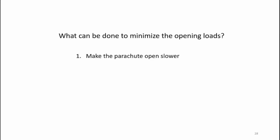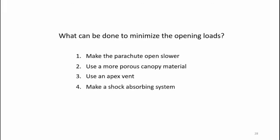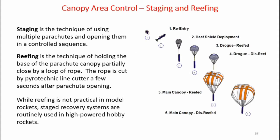Here are some ways to minimize opening loads: you can make the parachute open slower, use a more porous canopy material, use an apex vent which is a hole in the top of the parachute, or make a shock absorbing system. Canopy area control is known as staging and reefing. Staging is a technique of using multiple parachutes and opening them in a controlled sequence — here you can see a drogue parachute which comes out first, and then the main canopy which deploys. Reefing is a technique of holding the base of the parachute canopy partially closed by a loop of rope; this loop is cut by a pyrotechnic line cutter a few seconds after parachute opening to help reduce opening loads. While reefing is not practical in model rockets, staged recovery systems are routinely used in high-powered hobby rockets.